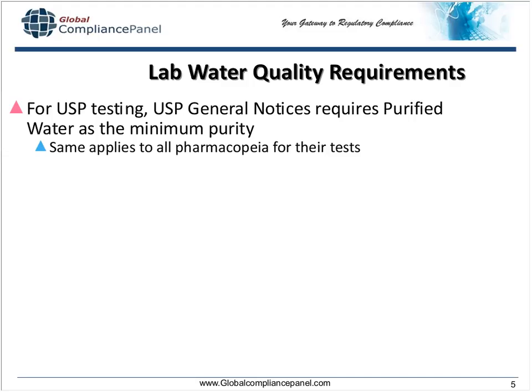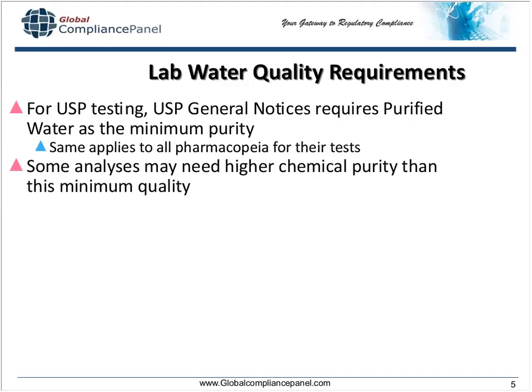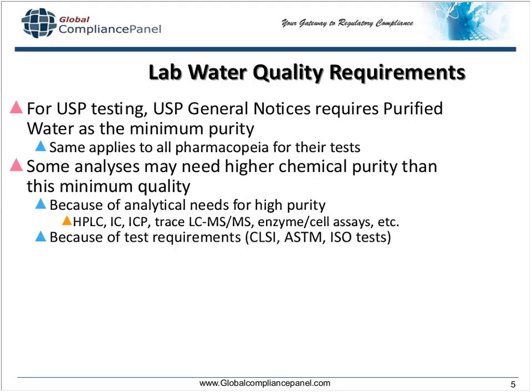If you're doing EP tests, you have to meet EP purified water requirements, which are different from USP's. You may also have analyses that require higher chemical purity because of the nature of the assay. If you have HPLC, ion chromatography, ICP, trace LC-MS/MS assays, or even enzyme or cell assays, you may need water of higher purity — a specific absence of certain types of chemicals — in order to perform those tests. This would be water quality in excess of purified water quality.